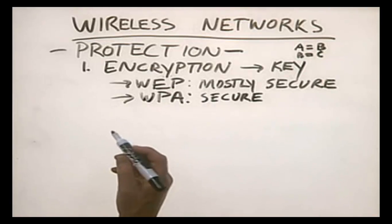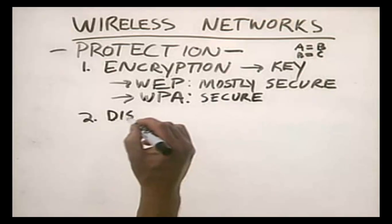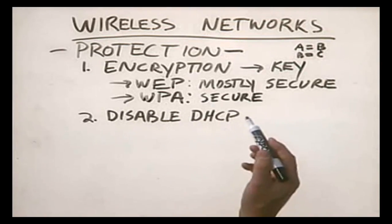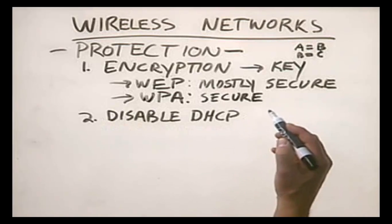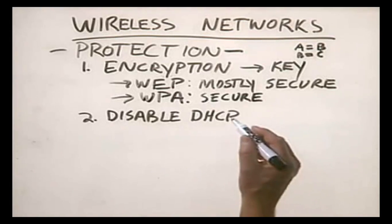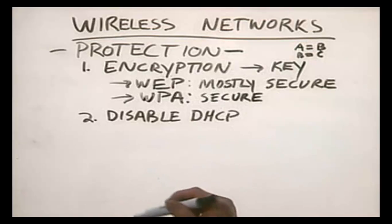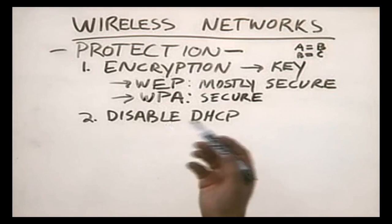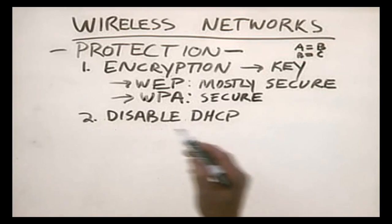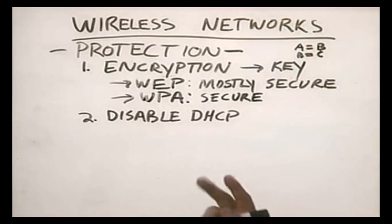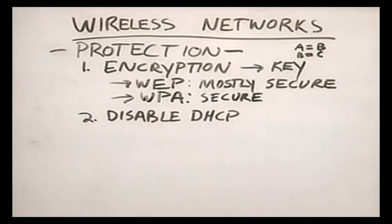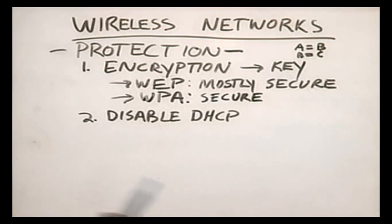Another thing you can do to protect your wireless network is to disable DHCP on the wireless access point. Most wireless access points have a built-in DHCP server that dynamically assigns IP addresses, gateway addresses, subnet masks, and DNS addresses when a computer starts up. The problem is that this makes it very easy for someone outside your building to attach their computer to your network — they simply connect and DHCP provides everything they need to participate on your network.